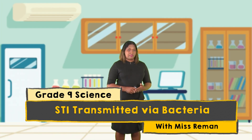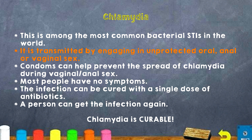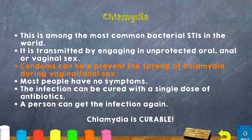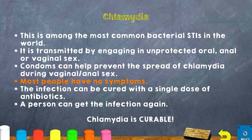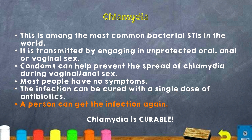Starting with Chlamydia. Among the most common bacterial STIs in the world, there is Chlamydia. It is passed on by having unprotected oral, anal, or vaginal sex. Condoms can help prevent the spread of Chlamydia during vaginal or anal sex. Most people have no symptoms. The infection can be cured with a single dose of antibiotics. A person can get the infection again once it's treated. Chlamydia is curable.